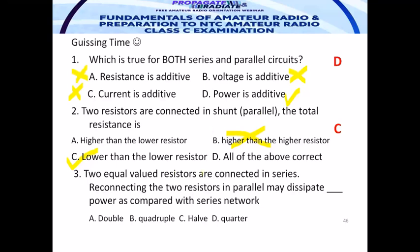Two equal-value resistors are connected in series. Reconnecting the two resistors in parallel may dissipate a different amount of power compared with the series network. The answer is letter B — a separate presentation will show the full derivation of this result.